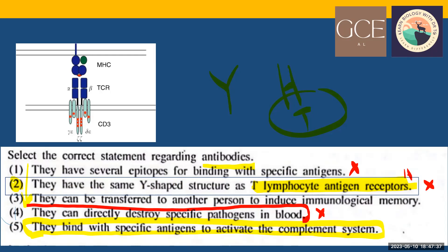Choice three — they bind specific antigen to activate the complement system — we haven't fully learned that yet. The negative point is often just one word different from the correct answer, so it is always important to identify which word or meaning is incorrect when answering MCQs.